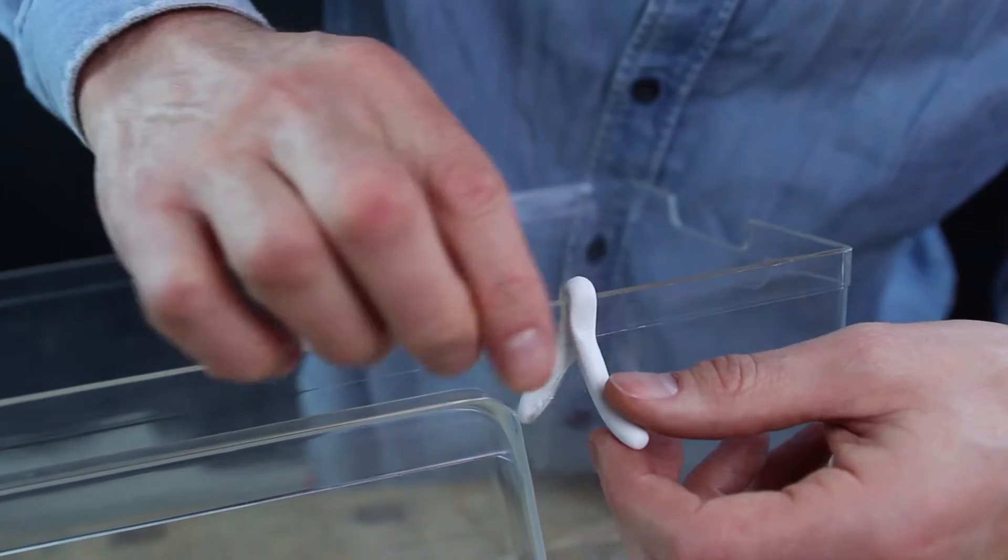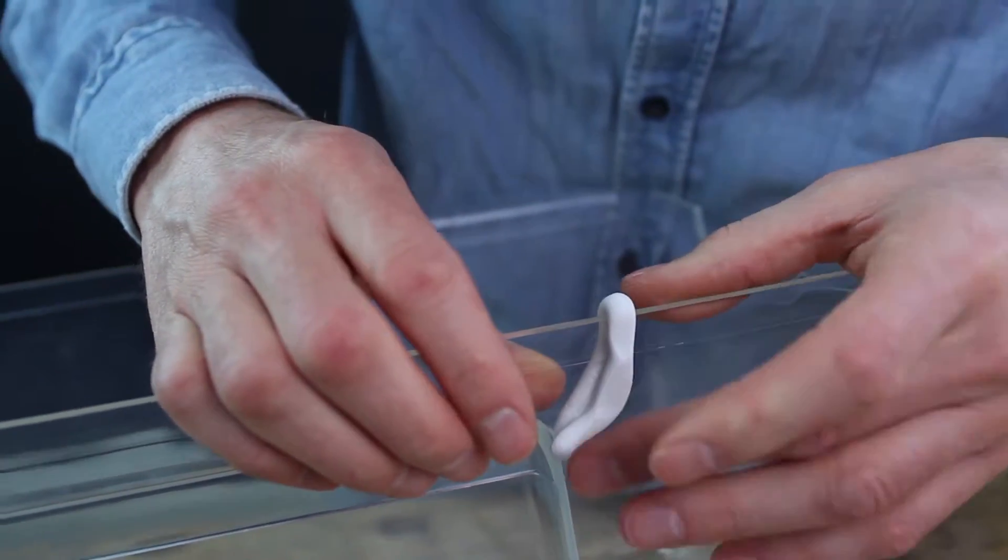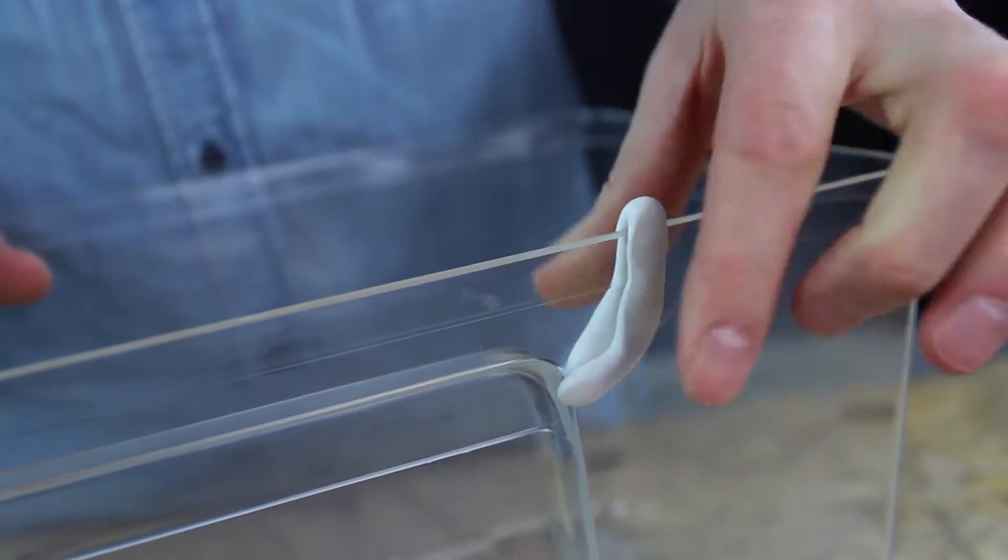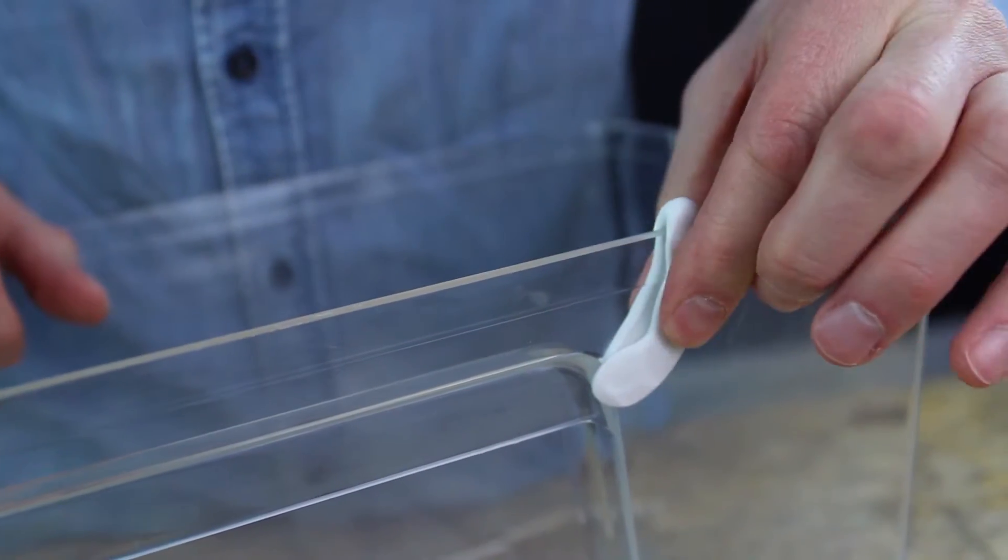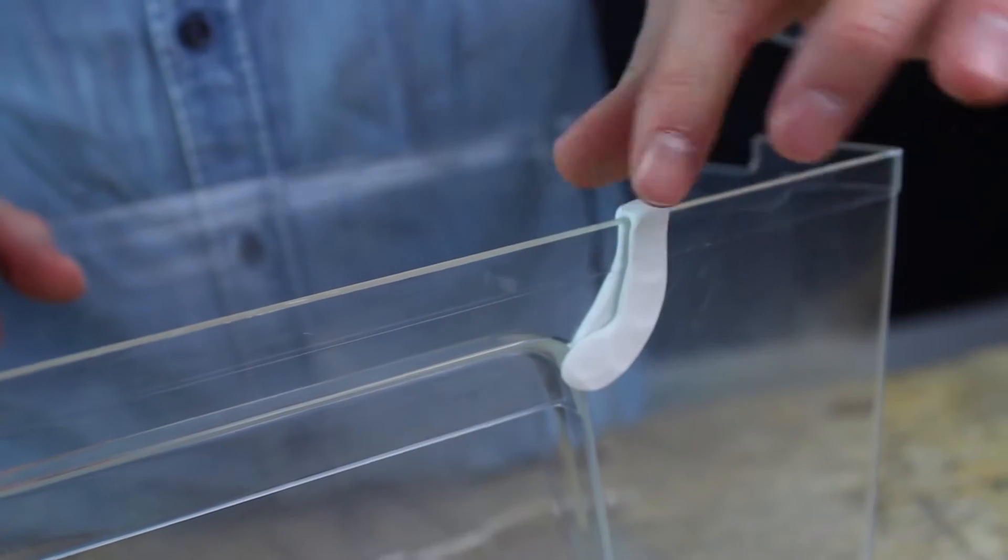Position the sausage. Now press the Sugru onto the surface. Continue to press the Sugru to flatten it and to get a very good bond.